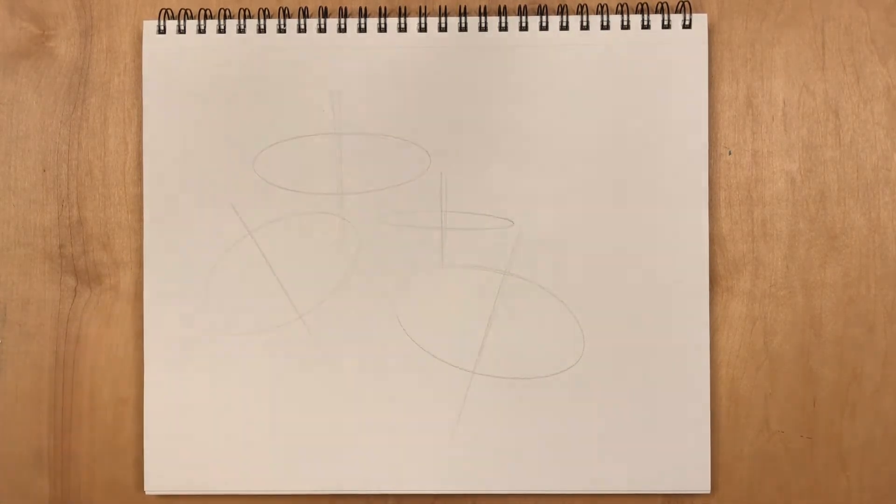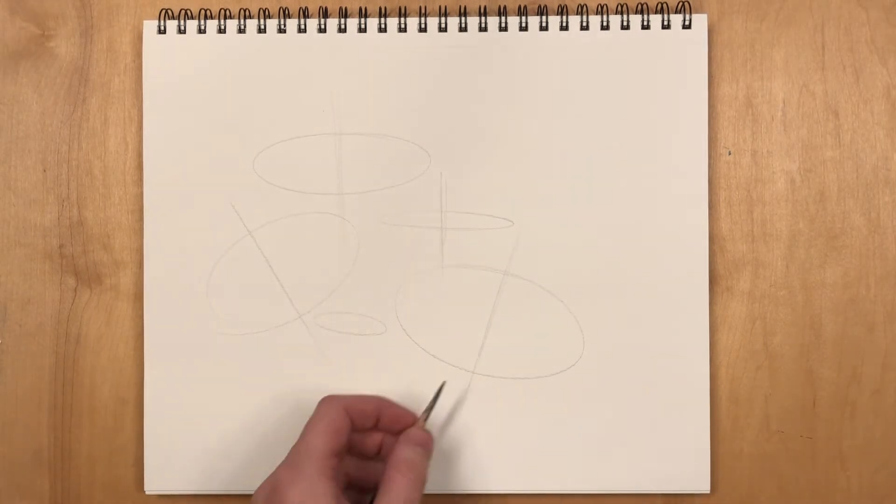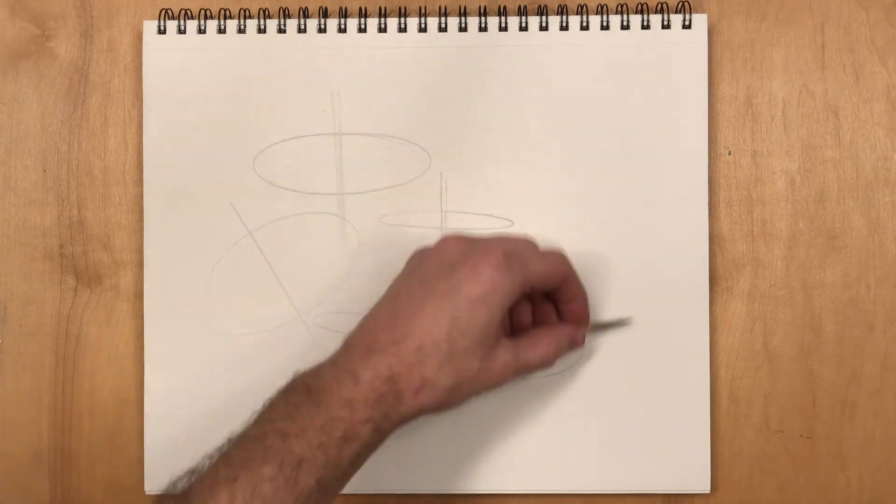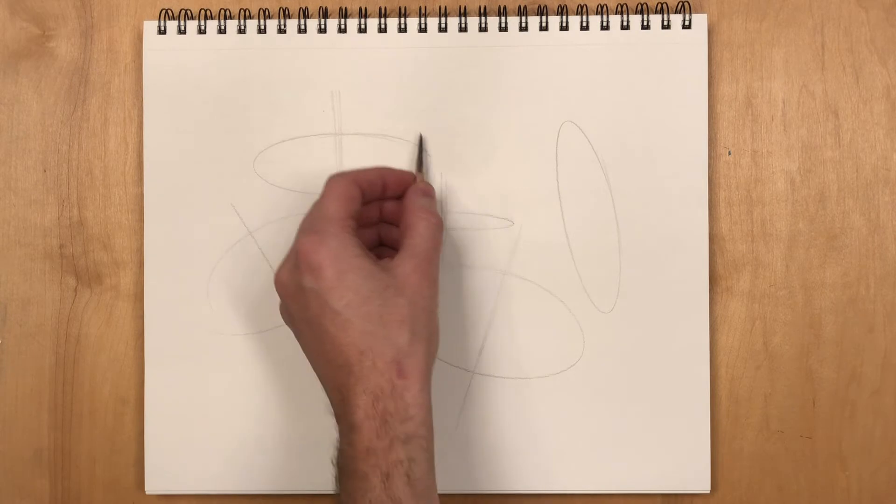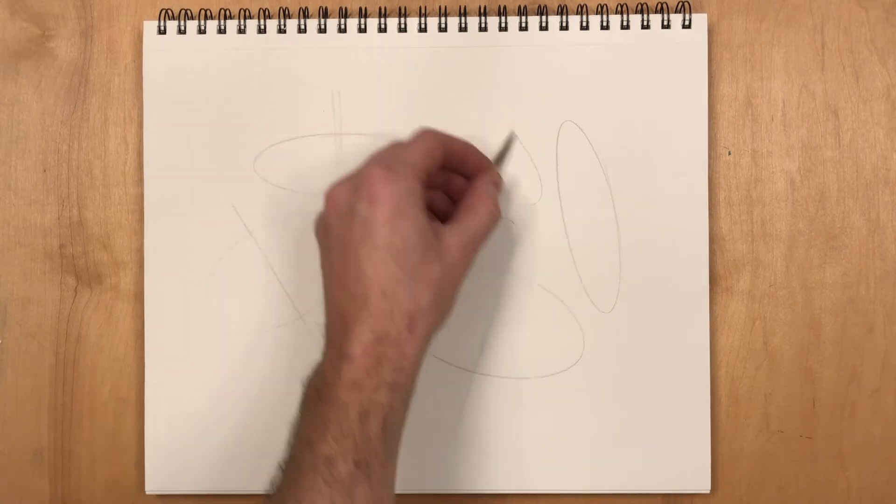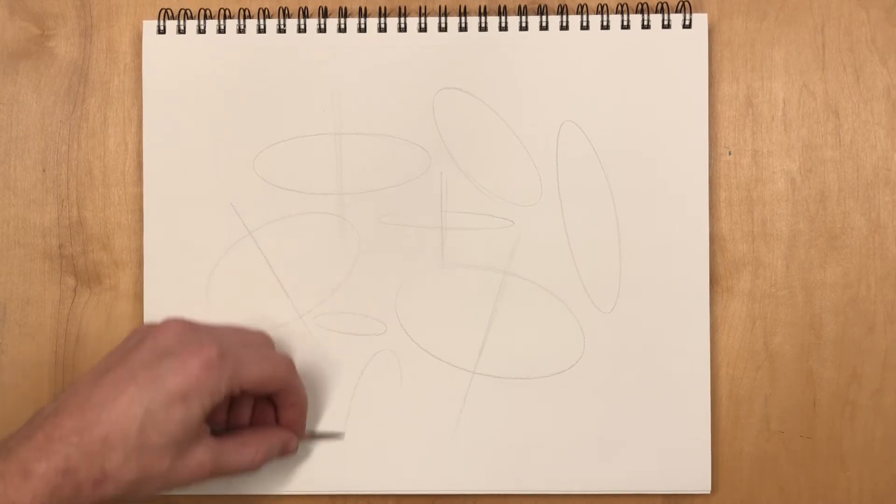You'll see how these look like the example. There's a continuous curve throughout them. The ends aren't pinched like a football. There's no flat spots on them like a hot dog. It's just a continuous curve throughout.